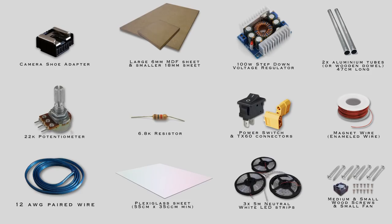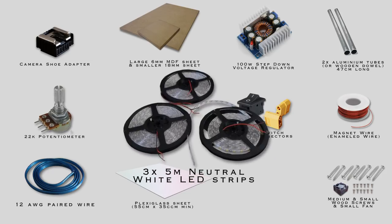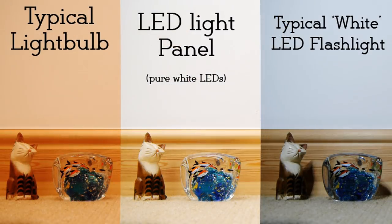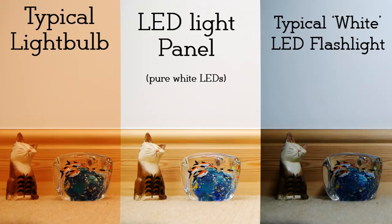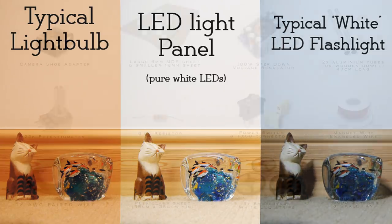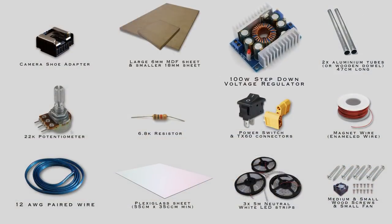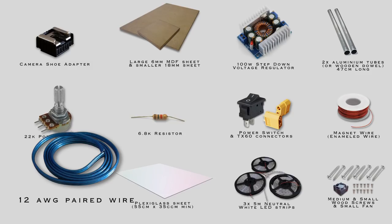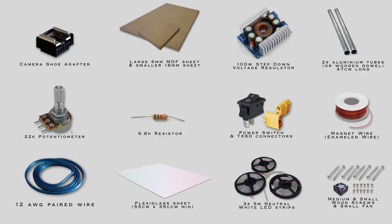For this project you'll need the following items, all of which are listed in the video's description. The main component is three 5m strips of neutral white LEDs. These specific LEDs are pretty much pure white with no blue or yellow tint. Other important components include a voltage regulator, 2m of 12 AWG paired wire, some magnet wire, one large sheet of 6mm thick MDF and a smaller sheet of 18mm thick MDF.